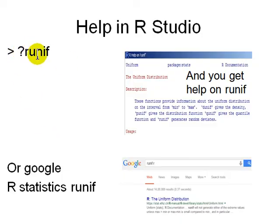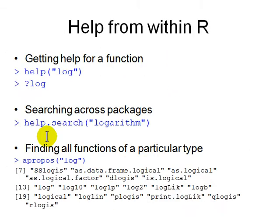The first thing to know is you can type a question mark in the console followed by a function name to see help about it. You can also just directly type into Google. Google will do spelling correction, which is an advantage, and also shows you anything else around the world which might be helpful if the manual is too difficult to read.